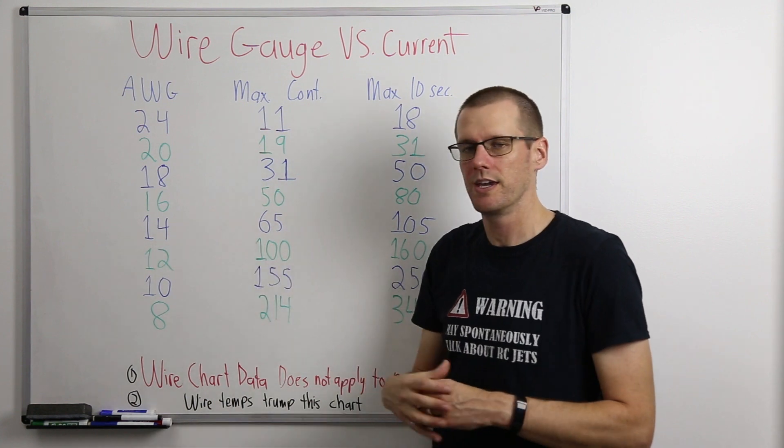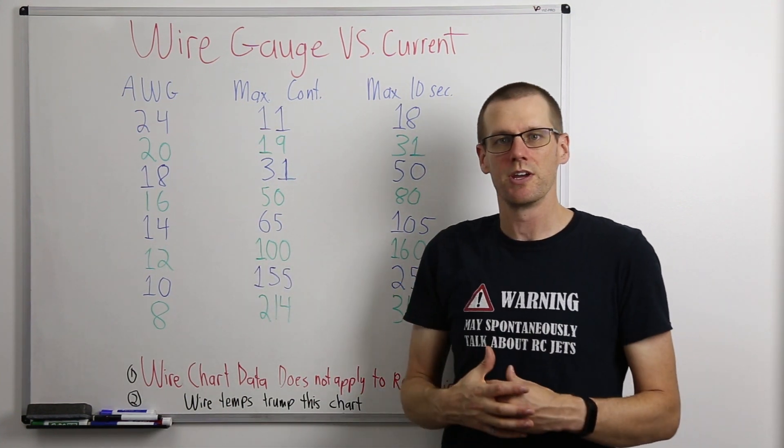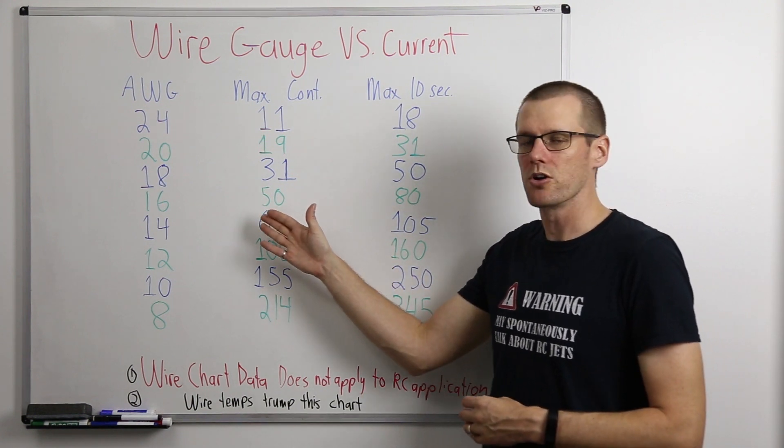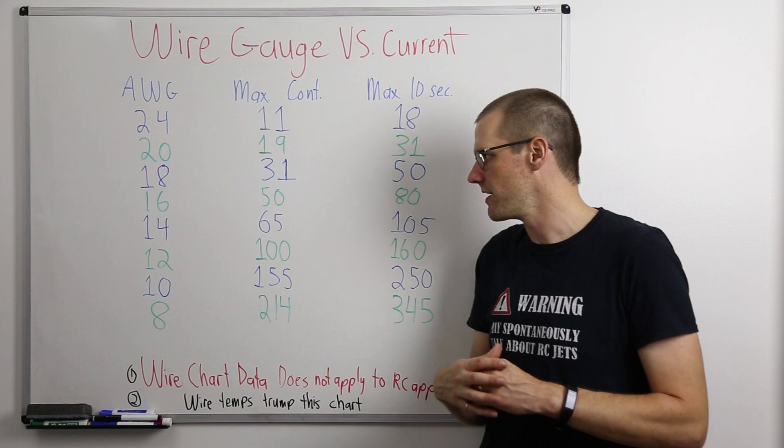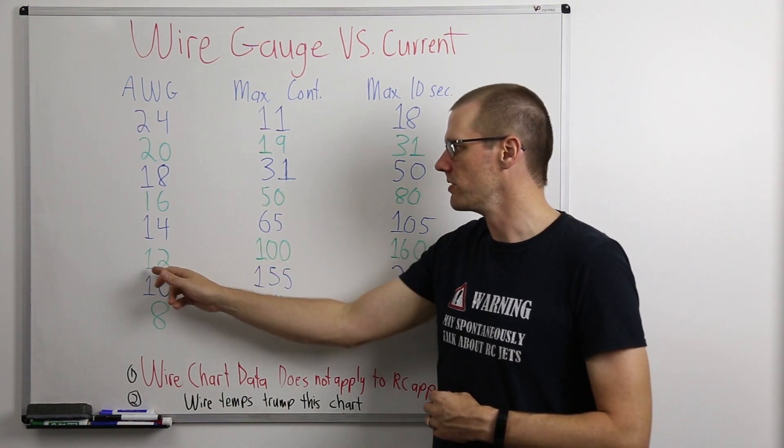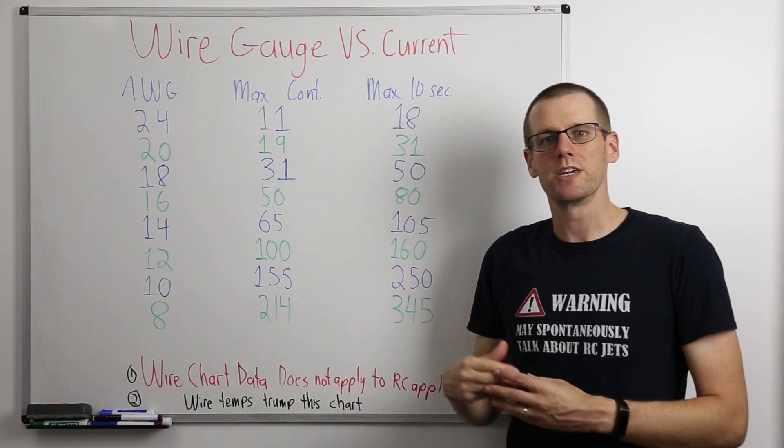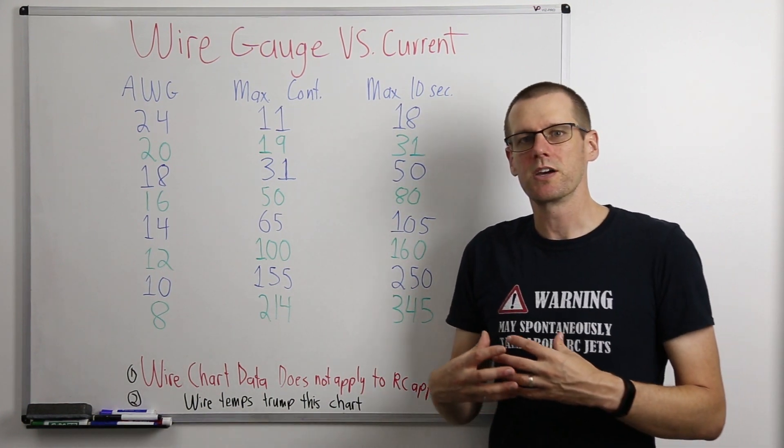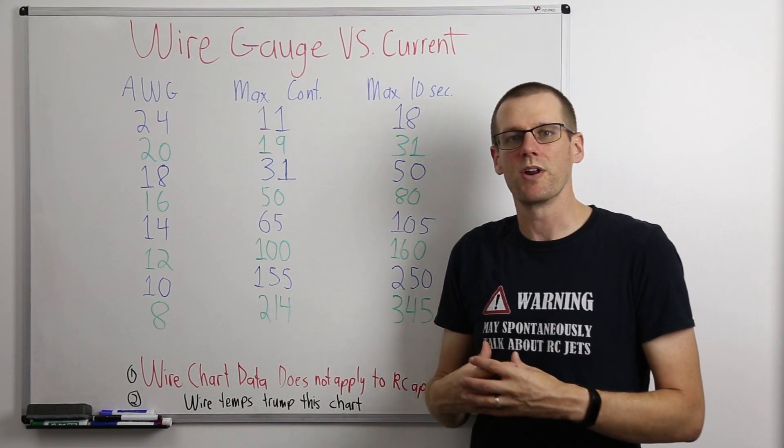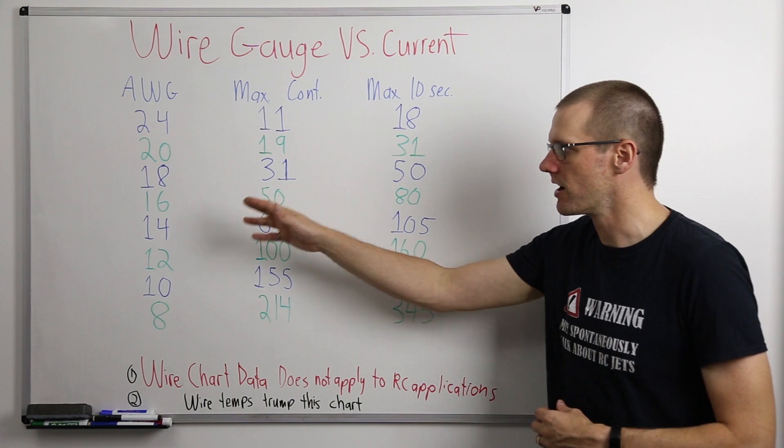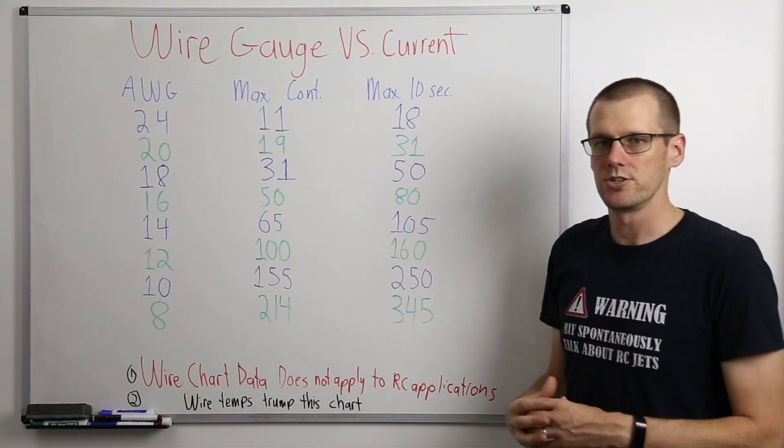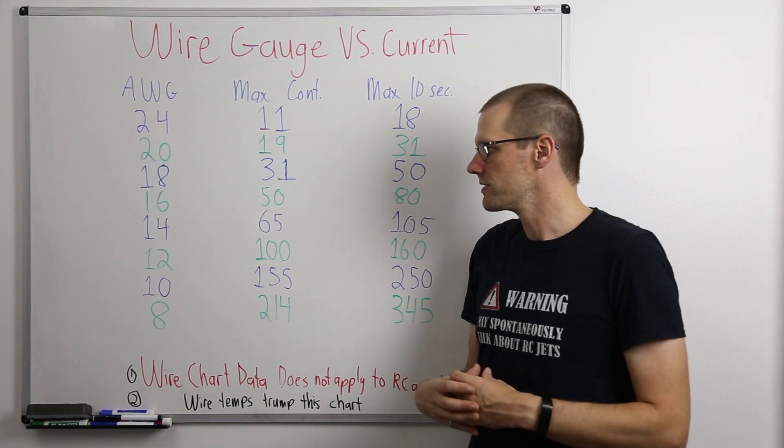For example, if you're using 14 gauge, but you're only actually pulling somewhere around 60 amps, but you notice that your temperatures are going over that maximum threshold, and we'll talk about what that number is very shortly here, then you would be best to move up to the next gauge of wire in order to keep those temperatures down. This might be because of the ambient temperature that you're operating in. It might be really hot, or you don't have any cooling, or there's multiple different factors that can come into play that is not all included within this chart.